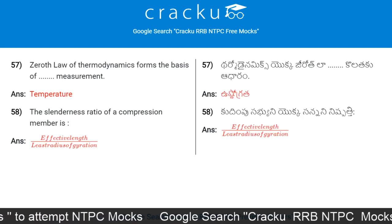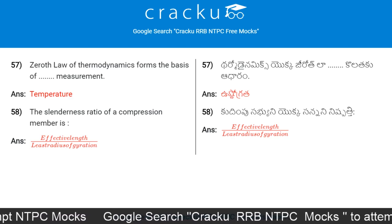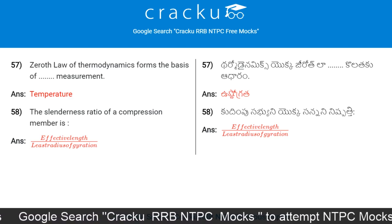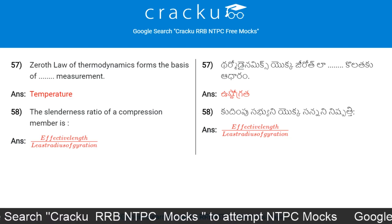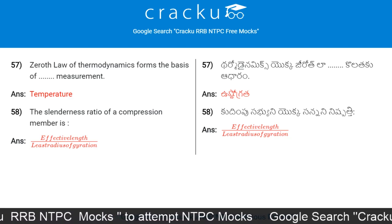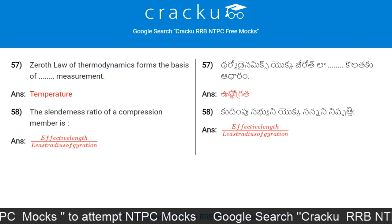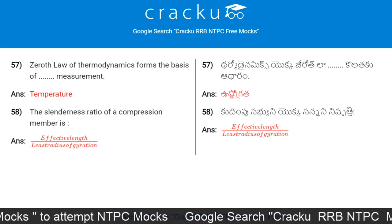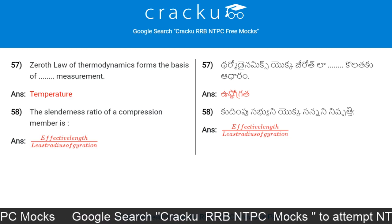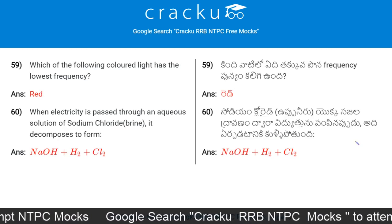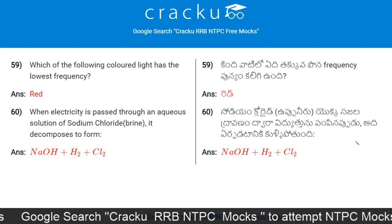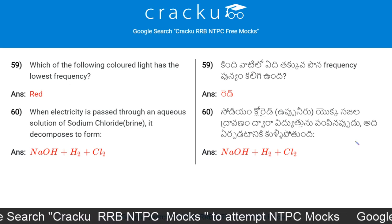The zeroth law of thermodynamics forms the basis of temperature measurement. The slenderness ratio of a compression member is effective length divided by least radius of gyration. Which coloured light has the lowest frequency? Red.